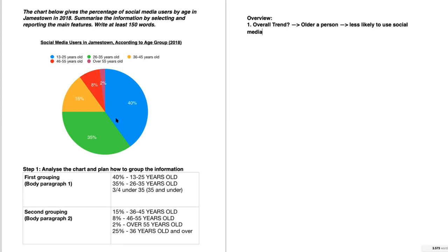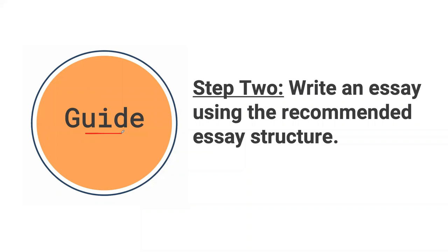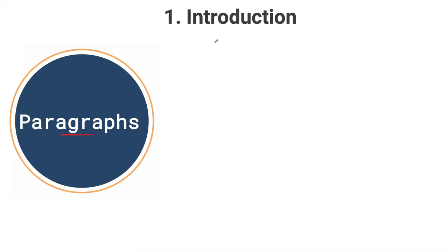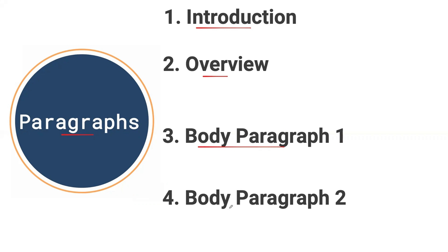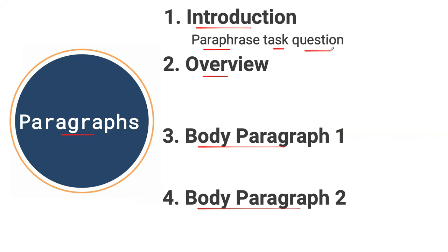Now let's go back to step two, which is writing an essay using the recommended essay structure. You're going to use four different sections. The first is the introduction. The second is the overview. Then the third and fourth are body paragraph one and body paragraph two — these go hand in hand with our first and second groupings. In your introduction, you paraphrase the task question using your own words. In your overview paragraph, describe the overall trend or give a general overview of the main groupings.